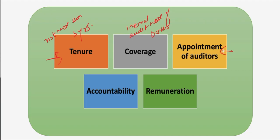On appointment of auditors, banks have the option of selecting whether concurrent audit should be done by the bank's own staff or external auditors, left to the discretion of individual banks. Auditors should be experienced, well-trained, and sufficiently senior, and must be independent of the branch or business unit being audited. On accountability, the appointment will be cancelled if serious acts of omission or commission are noticed. On remuneration, the audit committee of the board of directors will decide the remuneration paid to external concurrent auditors.